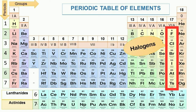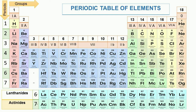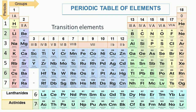Group 18 elements are called noble gases because they do not react with any other elements. The elements of groups 1, 2, 13, 14, 15, 16, and 17 are called main group elements, also known as normal elements, typical elements, or representative elements. The elements of groups 3 to 12 are called transition elements.